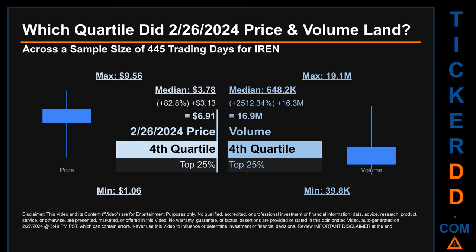Quartiles tell us about the spread of a data set by breaking that data set into quarters, just like how the median breaks the set into half. Descriptively, IREN has a median price of $3.78. Therefore, February 26, 2024's price was higher from that middle marker by 82.8%. The day's volume of 16.9 million was more than the median by 2,512.34%.